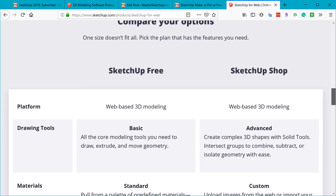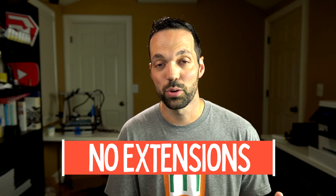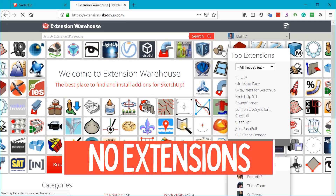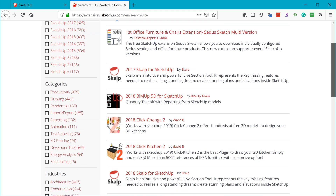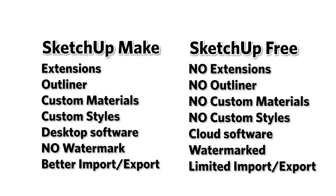The current free version of SketchUp is called SketchUp Free, which runs in your browser — no downloads required. You can run it on any computer as long as you have an internet connection. There are some distinct differences from SketchUp Make: most notably, you can't use any plugins with SketchUp Free. All plugins in the Extension Warehouse are developed for the desktop platform. The web version doesn't support plugins. You also can't customize styles or materials, and there's a watermark permanently on the screen, plus more limited import and export capability.